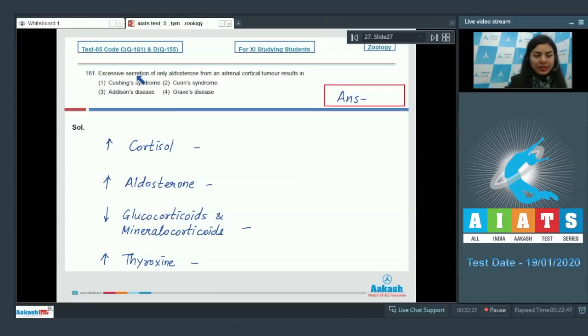Question 161: Excessive secretion of only aldosterone from an adrenal cortical tumor results in Cushing syndrome, Conn syndrome, Addison's disease, or Graves disease? The question mentions hyper secretion of aldosterone, and increased aldosterone secretion from the adrenal cortex due to a tumor would result in aldosteronism, also known as primary aldosteronism, that is Conn syndrome.